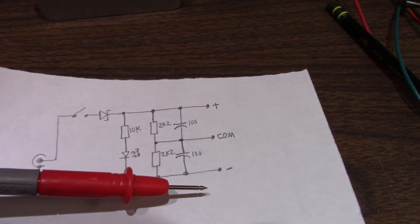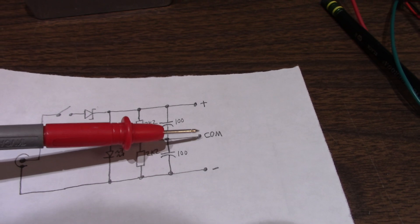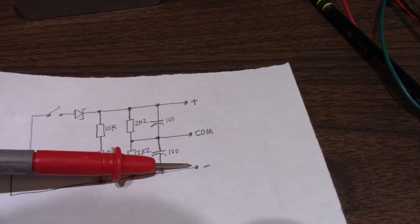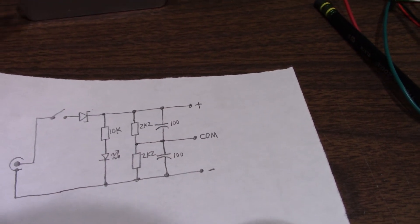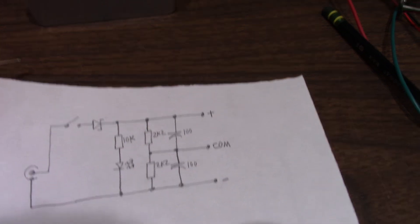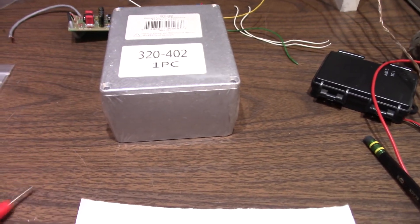And that's pretty much it. On the other side here we have the, we reference this as common. This will be negative. And of course this will be positive. So let me get this built and laid out on the board and start building out our little phono preamp here.